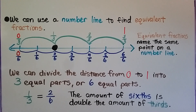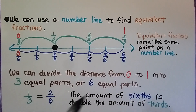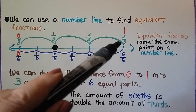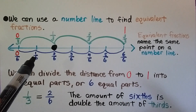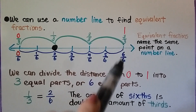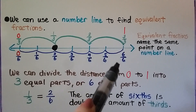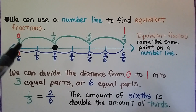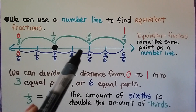We can use a number line to find equivalent fractions. Here we have zero and here we have one. The equivalent fractions name the same point on a number line. So here we have zero-thirds, one-third, two-thirds, three-thirds. Here we have zero-sixths, one-sixth, two-sixths, three-sixths, four-sixths, five-sixths, six-sixths. Remember, when the numerator and denominator are the same, it represents one whole because we have all the parts it was split into. We can divide the distance from zero to one into three equal parts or six equal parts.